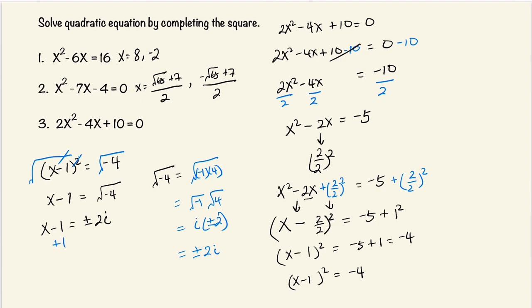And we're going to add 1 to both sides. This cancels. So x is equal to plus or minus 2i plus 1. I'm going to write this as 1 plus or minus 2i. And so our solutions are 1 plus 2i and 1 minus 2i.